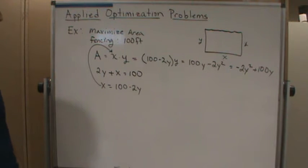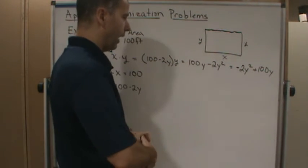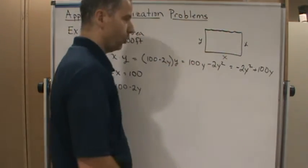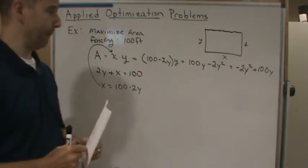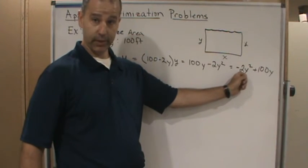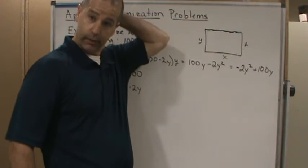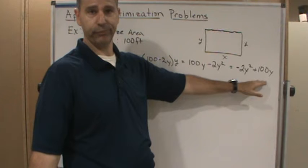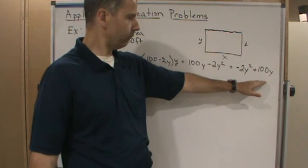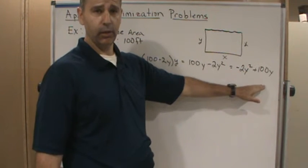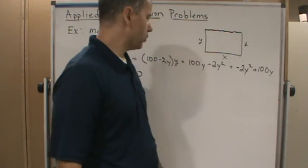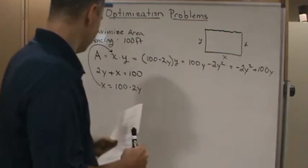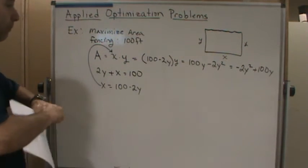This is going to be a parabola that opens downward, so there will be an absolute maximum. We could use algebra to find it, but we're going to use calculus instead. This function is continuous everywhere, though in the context of the problem we have some restrictions.